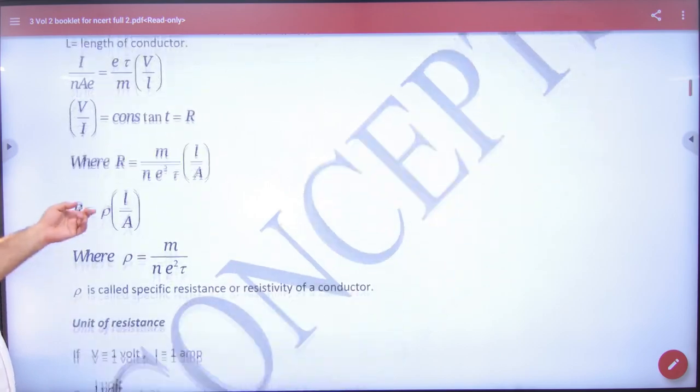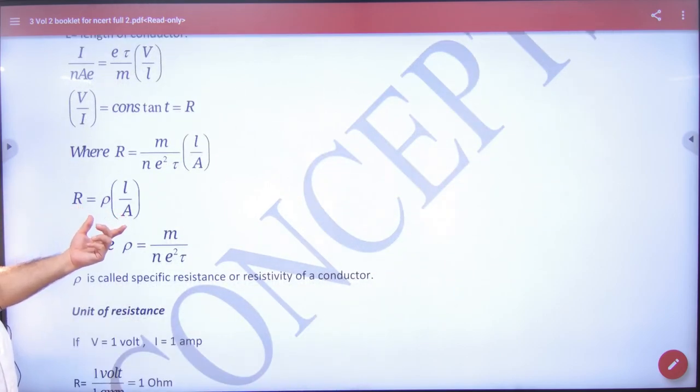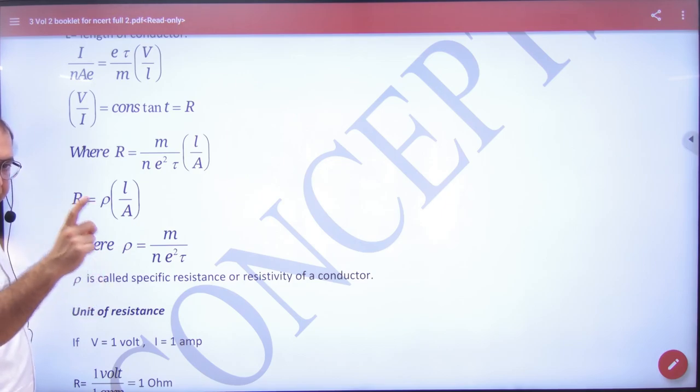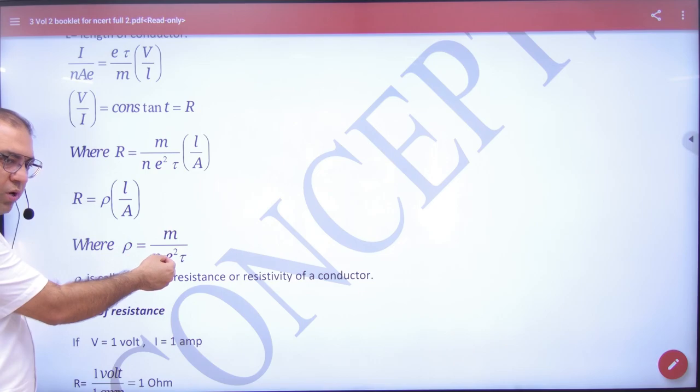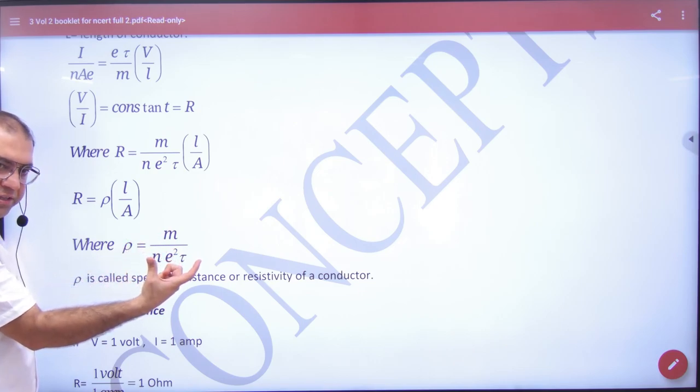Now I have shown you drift velocity that two formulas equate V by E, V by L constant. And we have written R is rho L by A, important formula. And resistivity formula.